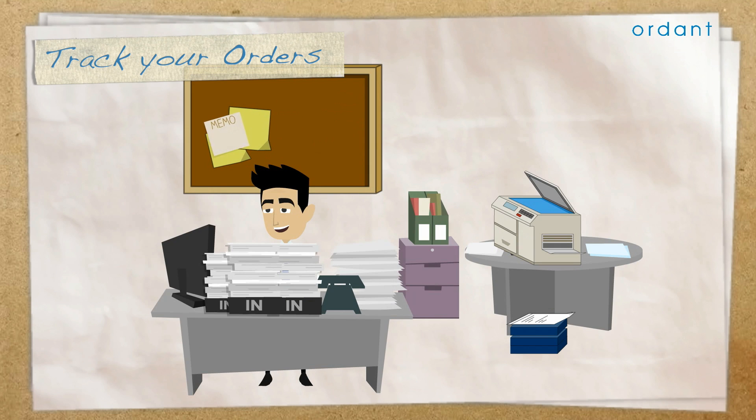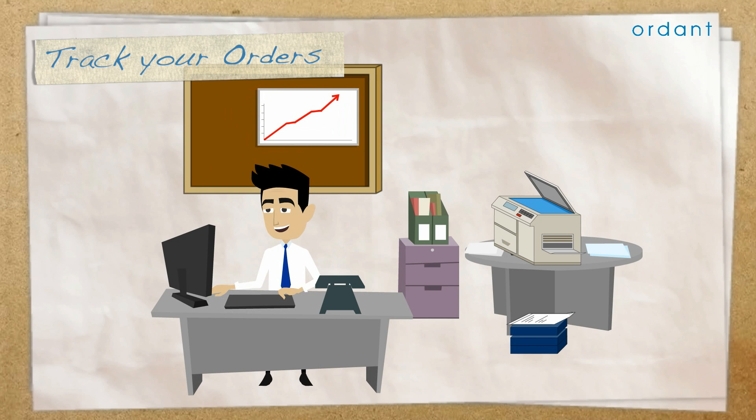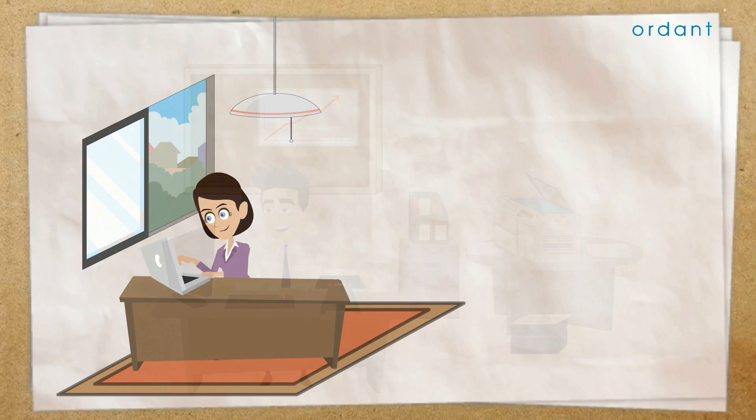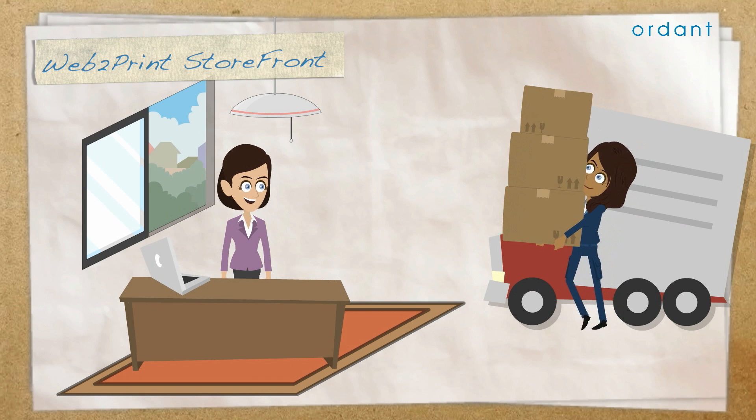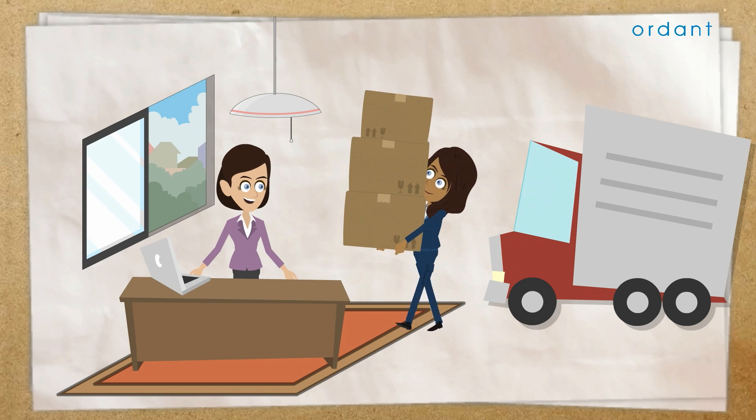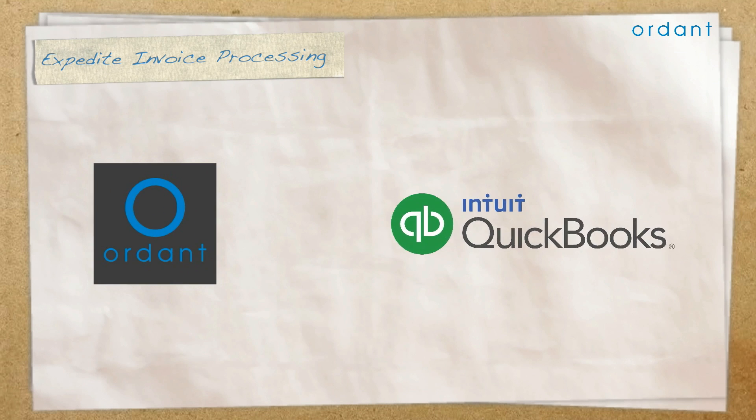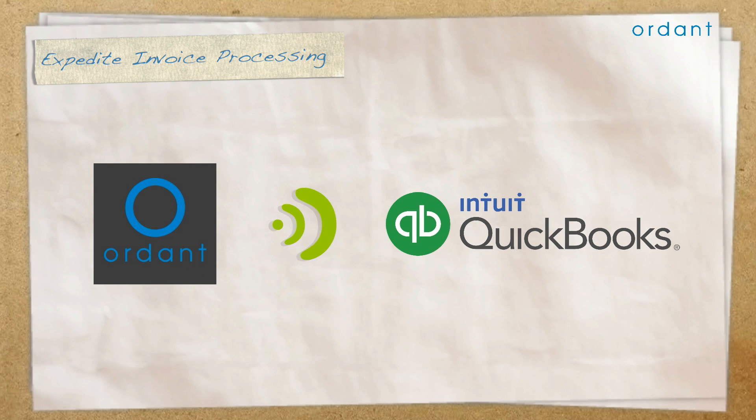With the help of Ordent, you can track and process all of your orders in an efficient manner. You can further reduce your costs by enabling your customers to place and track orders through Ordent's optional web-to-print storefront. Ordent can also automatically talk to your QuickBooks, which will significantly expedite your invoice processing.